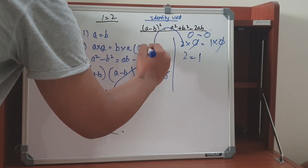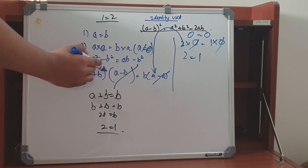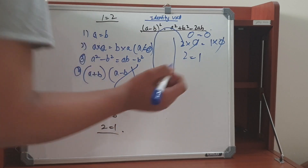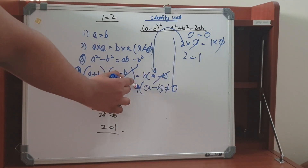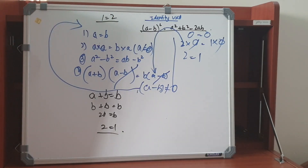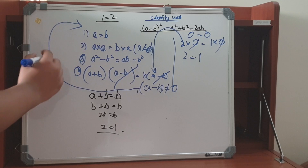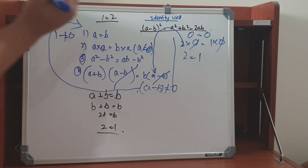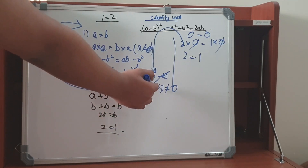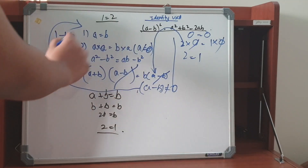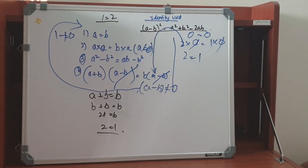We have to mention that a minus b is not equal to 0. What we declared in the first step is a is equal to b. If two numbers are equal and we subtract them, the value is 0 — for example, 1 minus 1 equals 0. So here a minus b is equal to 0, which means we are dividing by zero. So this method to prove 1 is equal to 2 is incorrect.